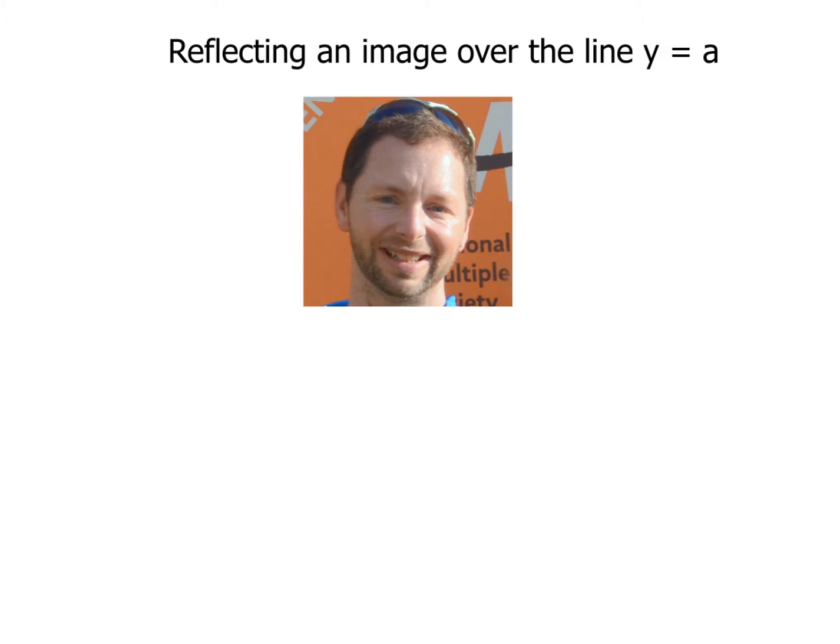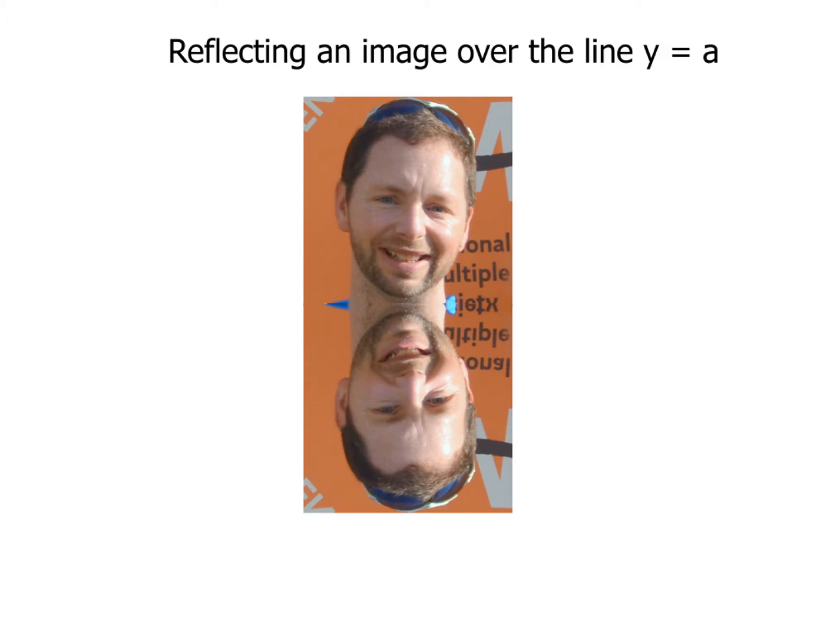Now the line y equals a could be any horizontal line. So what that's going to do is take a picture, an image, and reflect it over a horizontal line called y equals a. And a could be any single number that you want. So this is going to be pretty straightforward, and we're going to take a look at a couple examples here just to kind of get you started with it. And I think you'll pick it up very quickly as long as you can count.